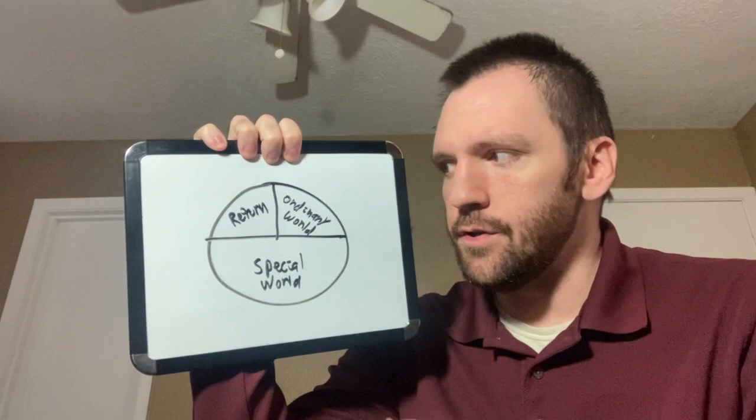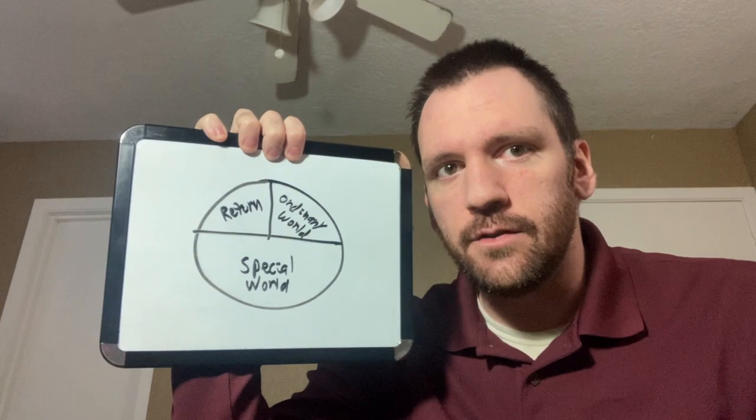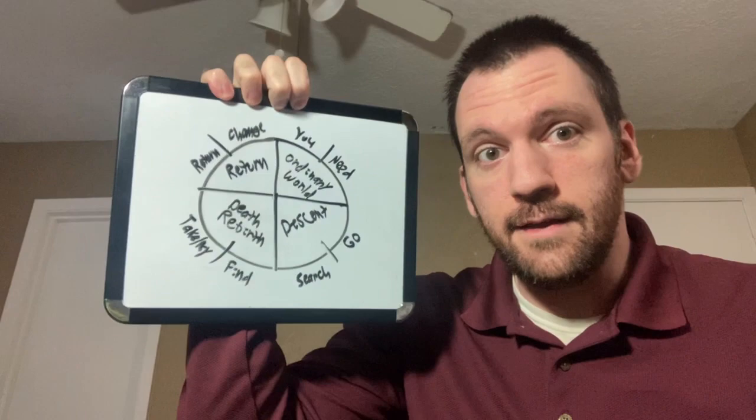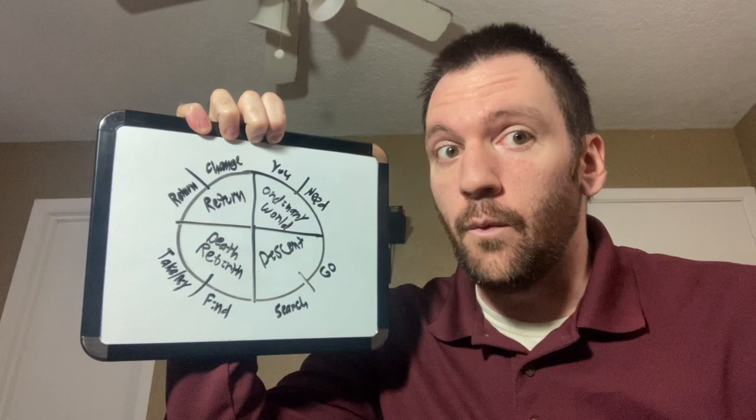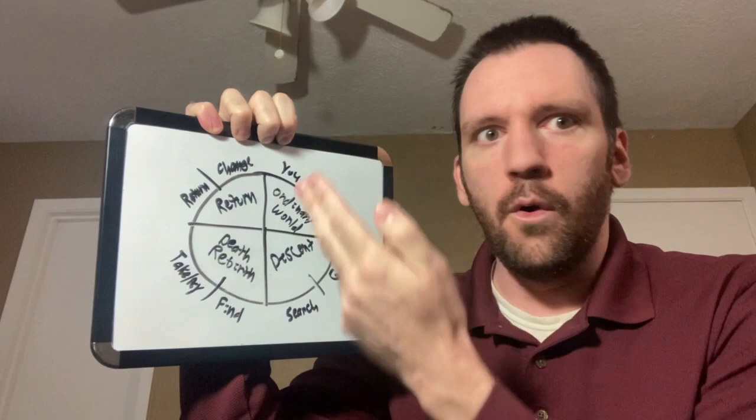Or do you use the hero's journey? You start a hero in an ordinary world, they go to the special world to collect some sort of boon or elixir, they have a death and rebirth, then they return to the ordinary world transformed. Or you can further divide the special world into the descent and the death and rebirth, or do what Channel 101's Dan Harmon did and divide it even further into eight steps in what he calls the story circle.